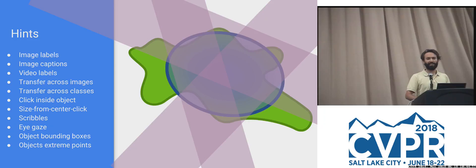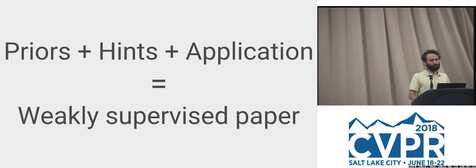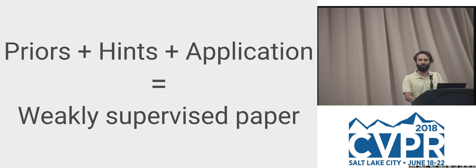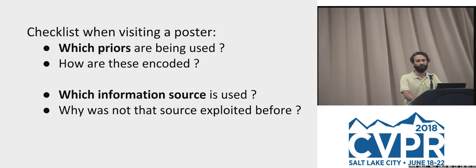Overall there are many different hints that can be used, some more informative than others. These are used as anchors during optimization. Earlier literature used fixed descriptors and convex optimization; more recently everything gets plugged into a convolutional network. The basic formula is: take priors you believe to be true, take hints you like, find an application domain — that's a weakly supervised paper. When checking a poster, ask which priors are used — explicit and implicit — and what new insight allowed this information source to be used.